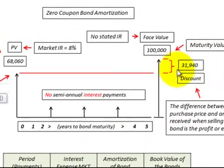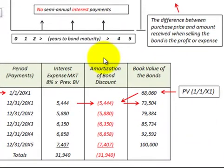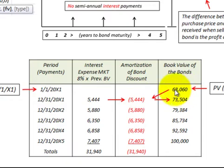Let's amortize the interest received or payable on this zero coupon bond. This assumes that we held it to its maturity value of $100,000 and we purchased it at its present value of $68,060. Going down to our amortization schedule, we start out with a book value of $68,060 when it was issued at the beginning of year one. For the interest expense in that first year, we take the market rate of interest times the beginning book value — 8% times this book value — and we determine the interest expense to be $5,444.